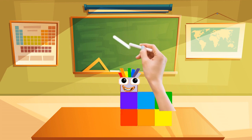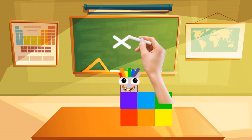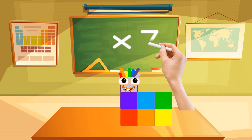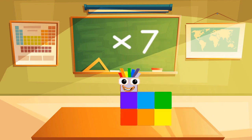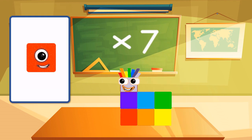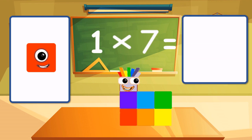Let's learn multiplication by seven. One times seven is equal to one, two, three, four, five, six, and seven.